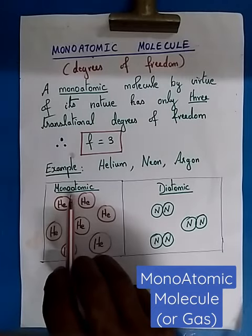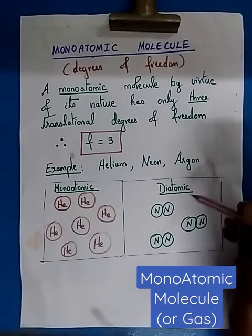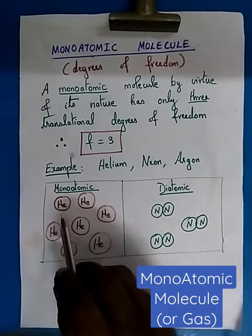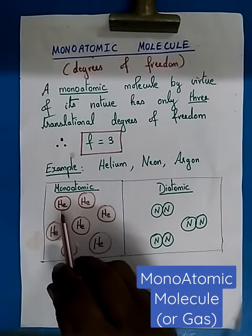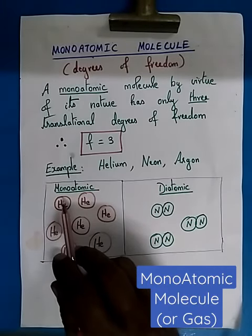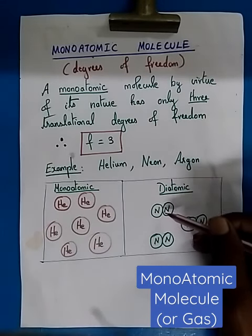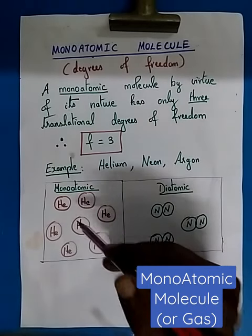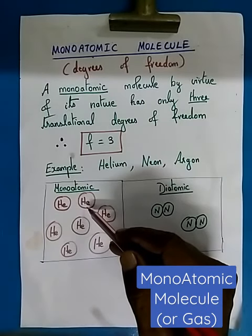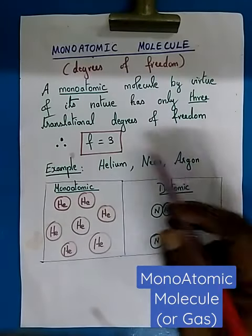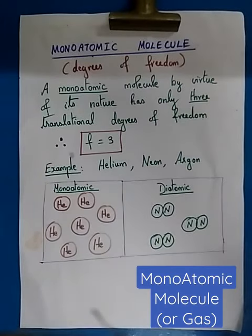The difference between a monoatomic molecule and a diatomic molecule is shown here. Helium is a monoatomic molecule, whereas nitrogen — it is N2 — is a diatomic molecule. Helium can move in free space. Therefore, the translational degrees of freedom F is equal to 3.